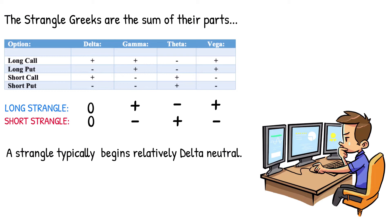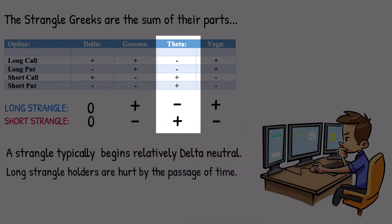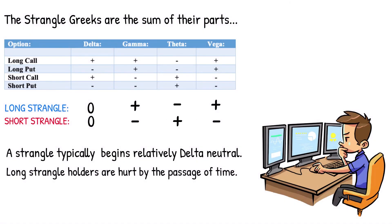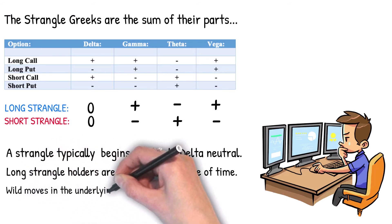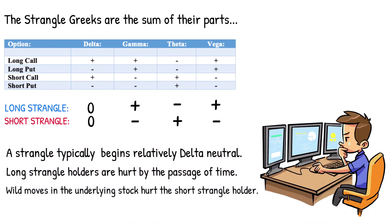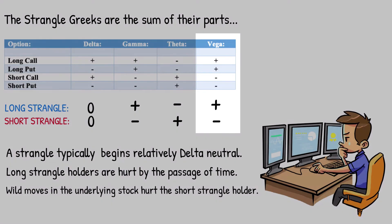The reverse is true for the short strangle holder — he effectively becomes longer and longer stock as the price falls. This is the major benefit of holding a long strangle: long gamma means large moves in the stock help the long strangle holder. However, there is a catch: the long strangle holder has negative theta, so the passage of time hurts his position. The strangle needs to move quickly or time decay can negatively impact profits. Wild moves and an increase in volatility help the long strangle since the position has positive vega. The reverse is true for the short strangle holder.